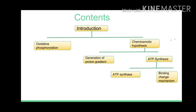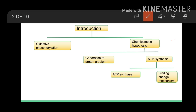My contents are in the form of a flowchart because I am going to proceed in the same flow. In the introduction we will cover two aspects: what is oxidative phosphorylation and what is the chemiosmotic hypothesis. Under the chemiosmotic hypothesis we will discuss two aspects: generation of proton gradient and ATP synthesis. Under ATP synthesis we will discuss the structure of ATP synthase and the binding change mechanism — the mechanism which tells us how ATP is formed.